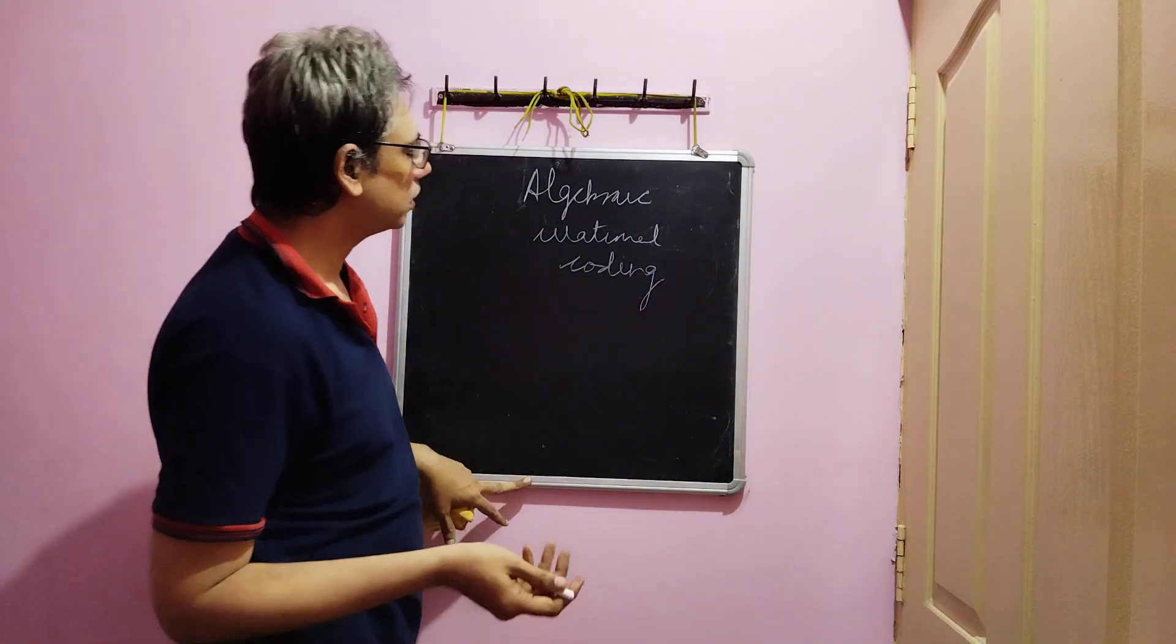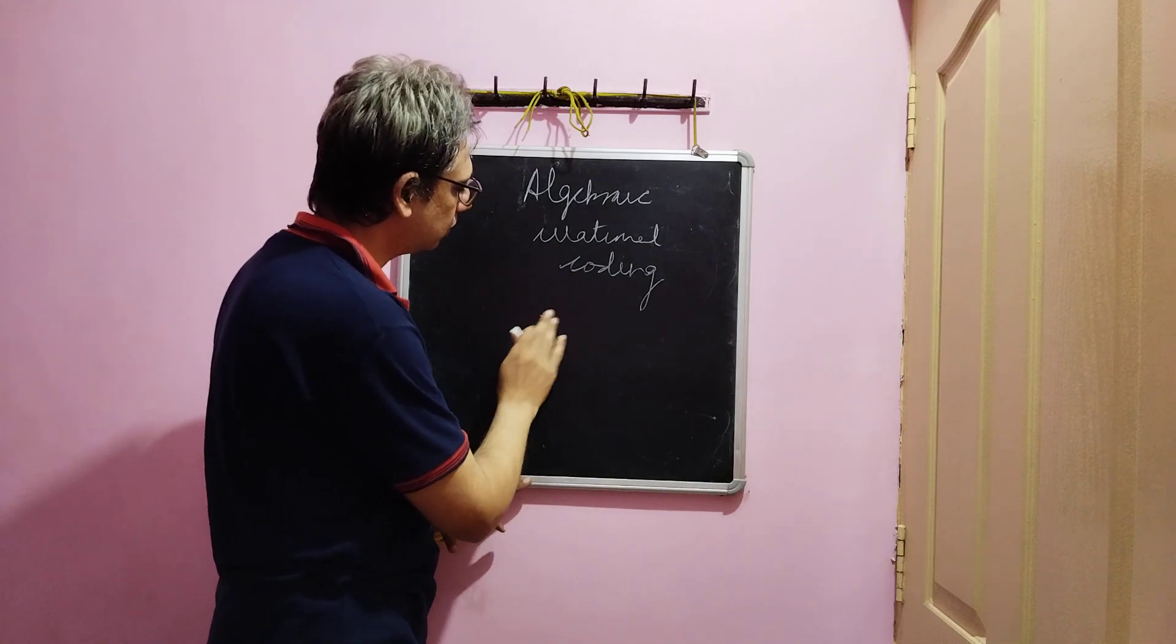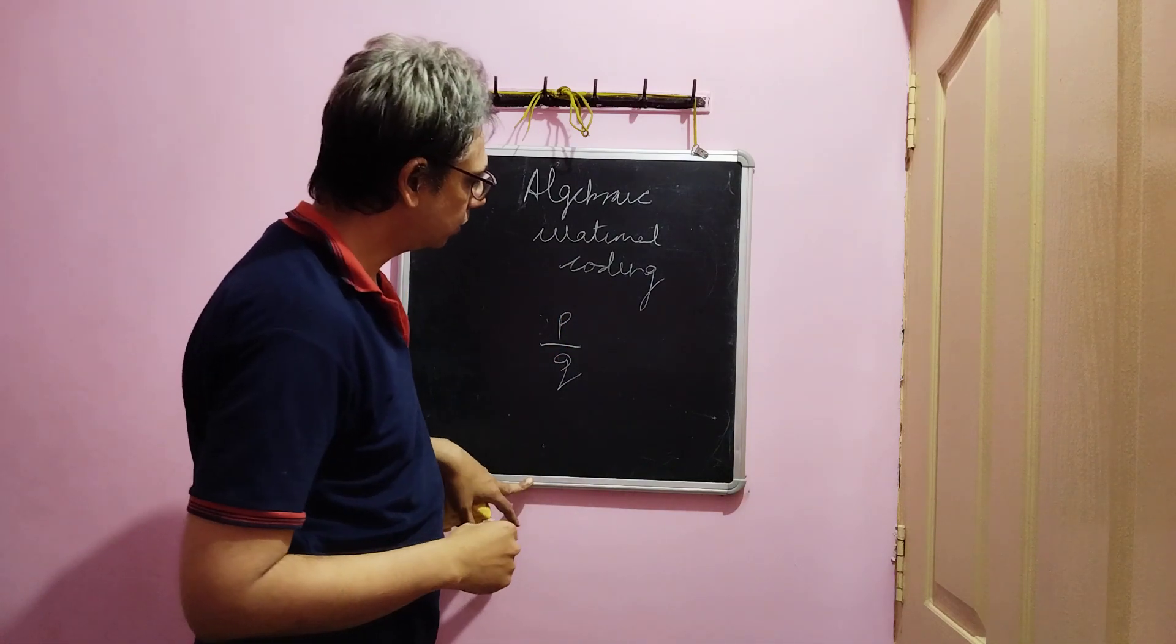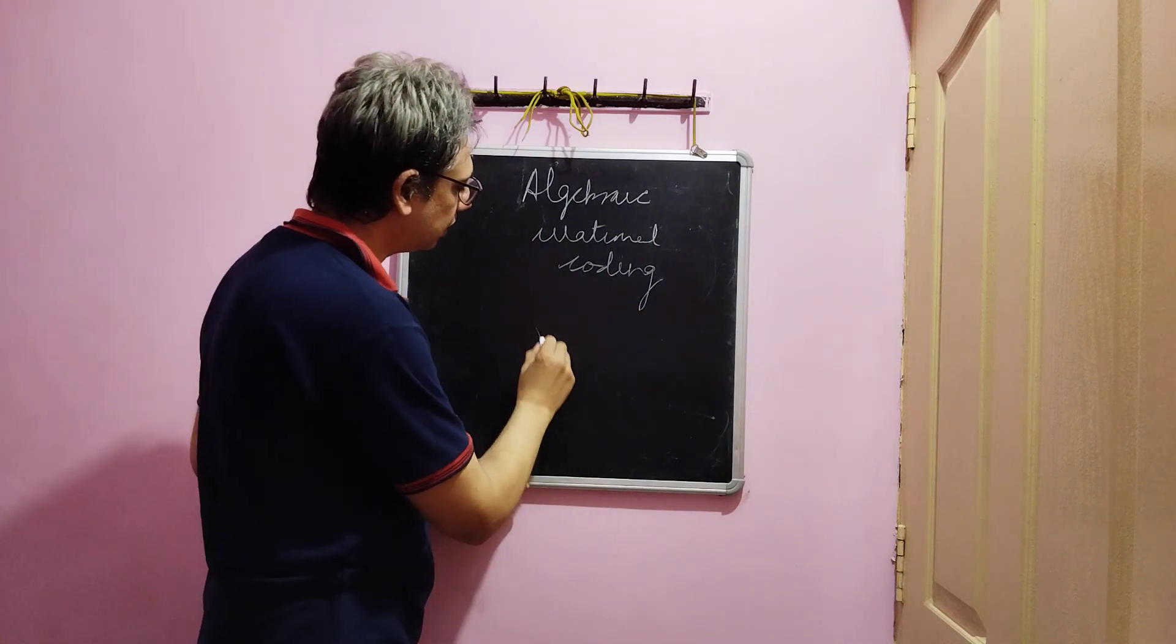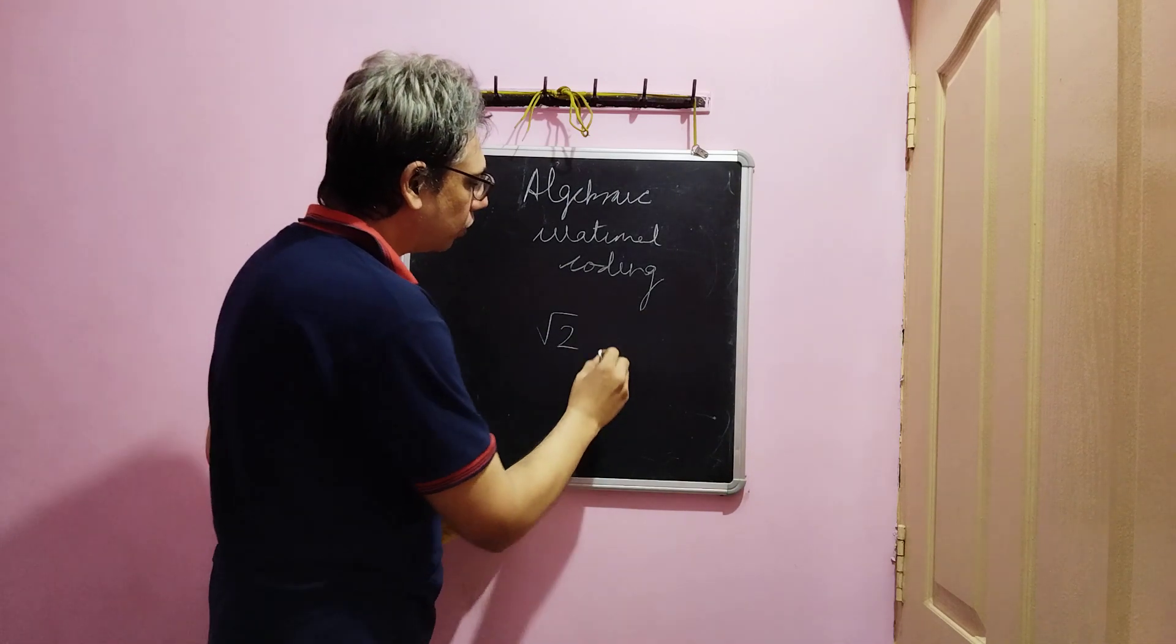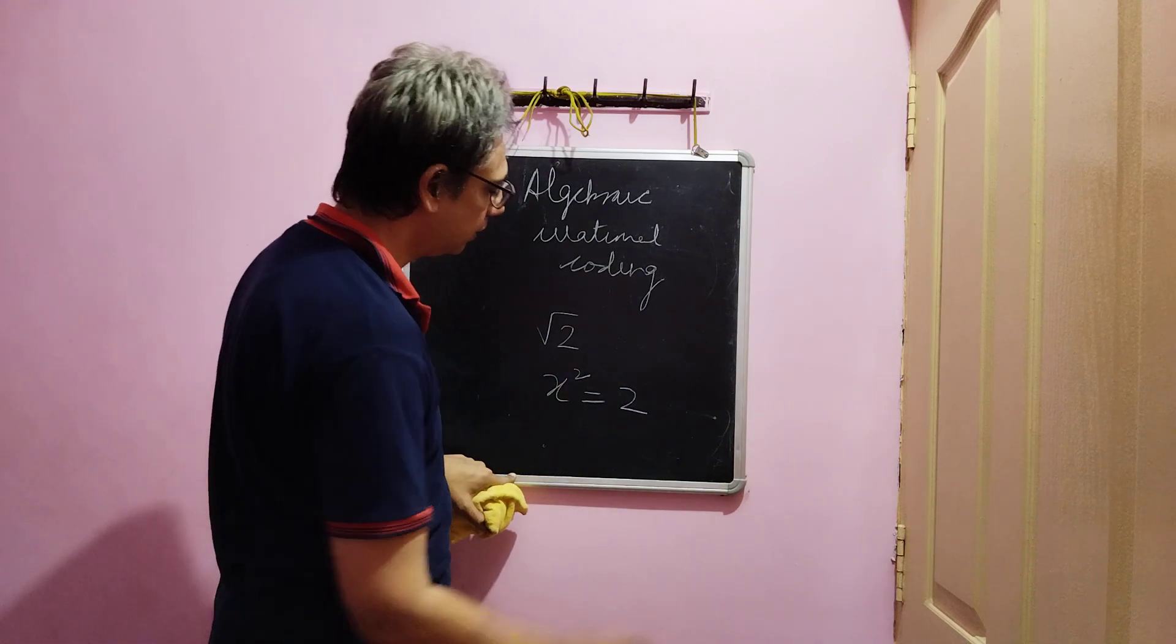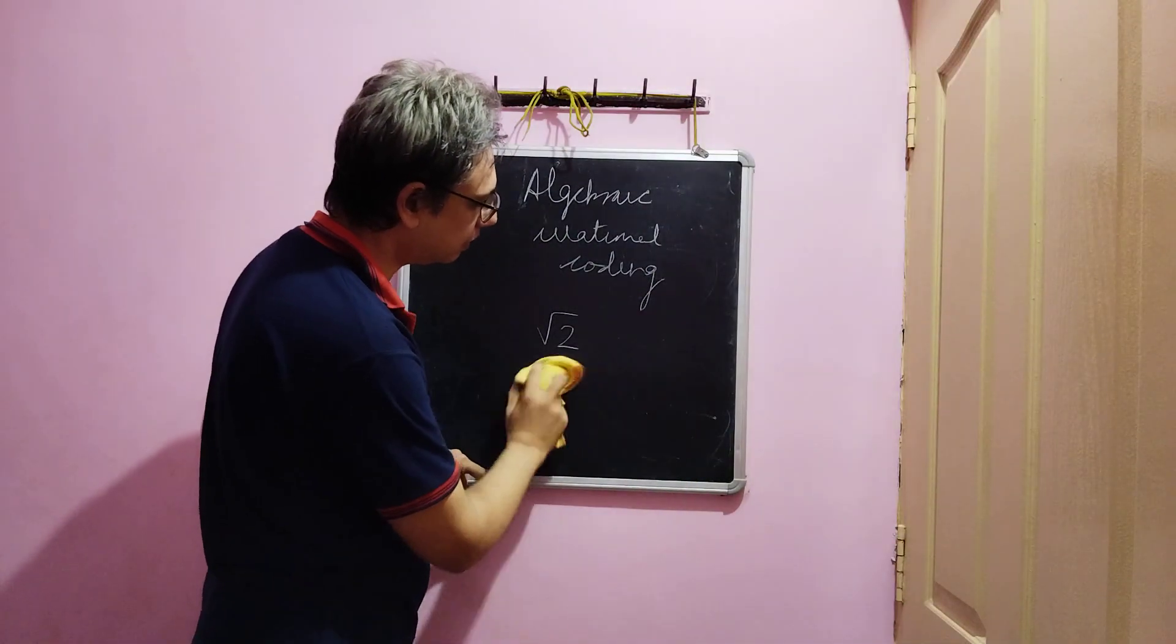When we are first introduced to algebra, we learn about irrational numbers as numbers that cannot be expressed as a ratio of two integers p by q, where q is not equal to 0. We also come to know that root 2 is an irrational number and it belongs to the class of irrationals called algebraic irrational since it is the solution of the equation x square is equal to 2, unlike pi which is called a transcendental irrational.